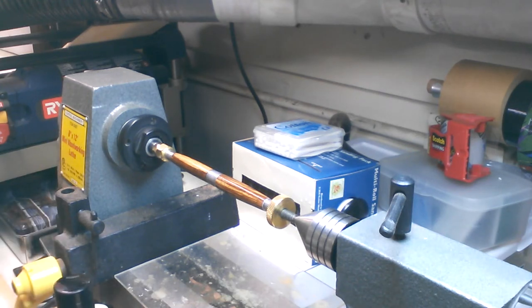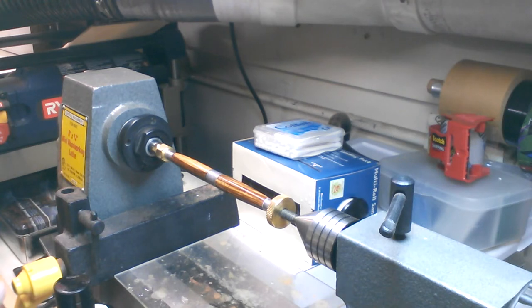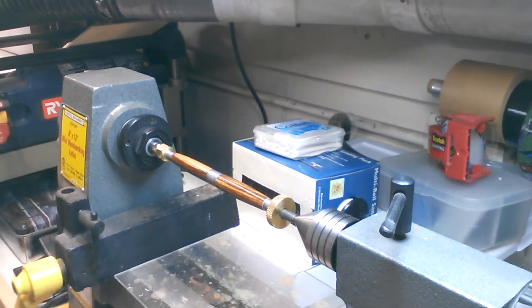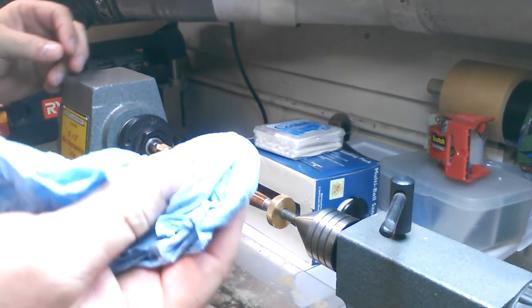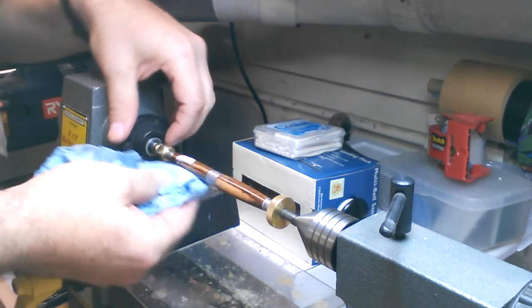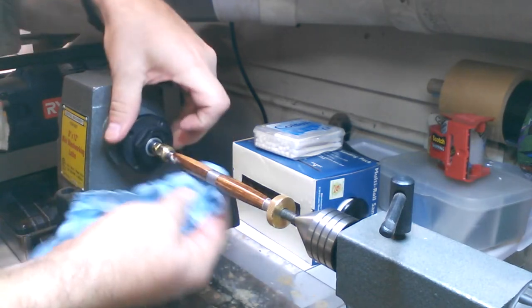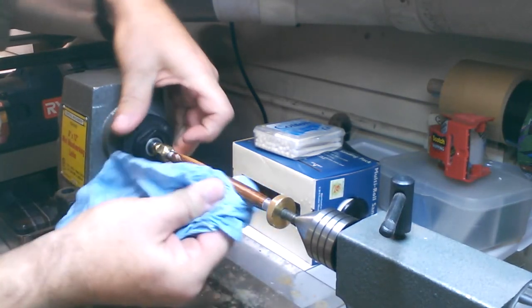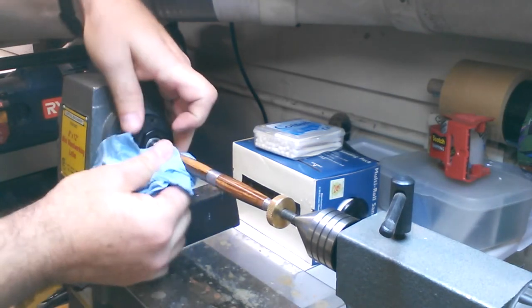So, again, just using your blue shop towel. I like to do this by hand first. It doesn't take much. Just a little bead on the end of the towel there. And, again, just kind of rub that on. Just to give it a little bit of a coat. Get it on both of them. Just kind of rub that around.